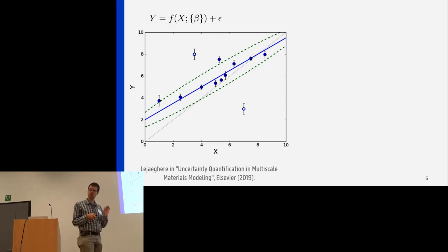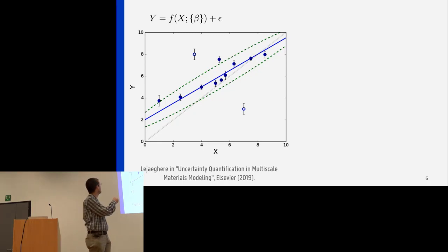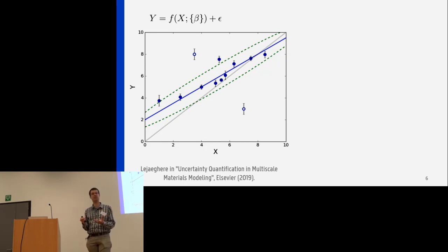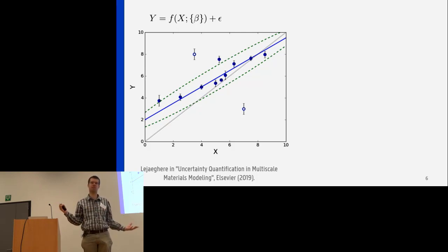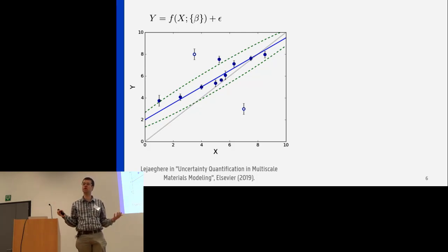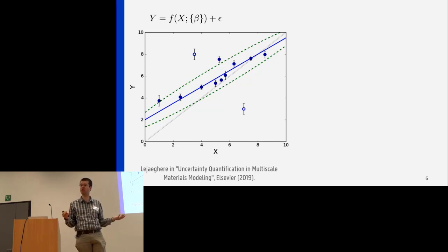And then finally, also very interesting and not to be underestimated, are outliers — elemental crystals for which the agreement between codes is much worse than the bulk of all the calculations. This is something very interesting to know, whether there are bugs or improvements that can be made code by code.